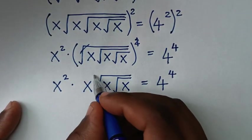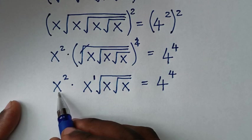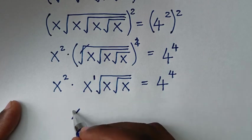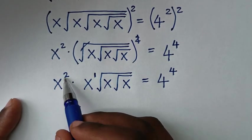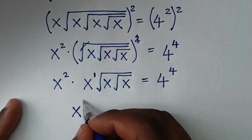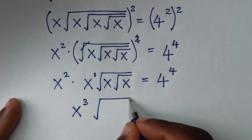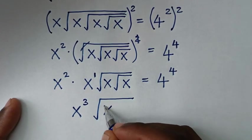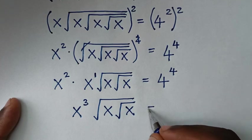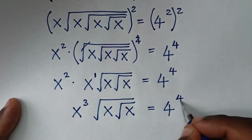From here, this x is same as x to the power of 1, so it will be x squared times x to the power of 1. We'll add the powers: power of 2 plus power of 1 is power of 3. Then, times square root of x under square root of x is equal to 4 to the power of 4.